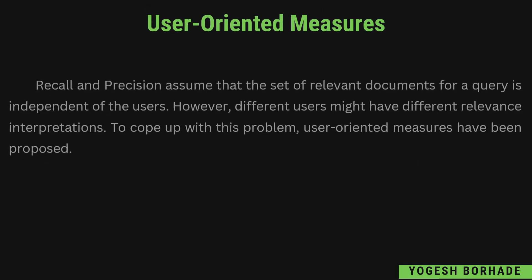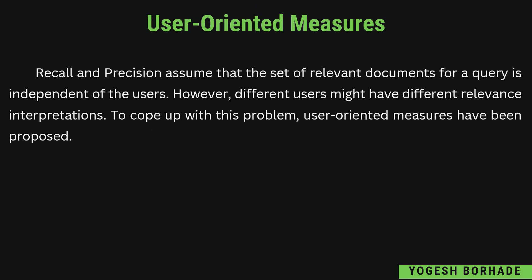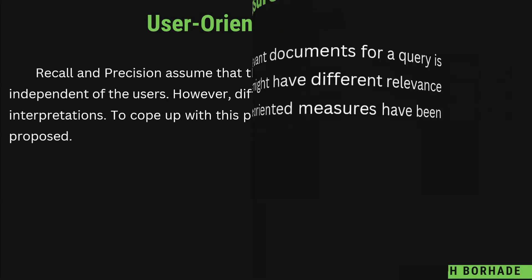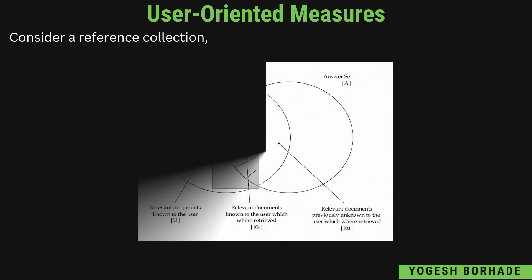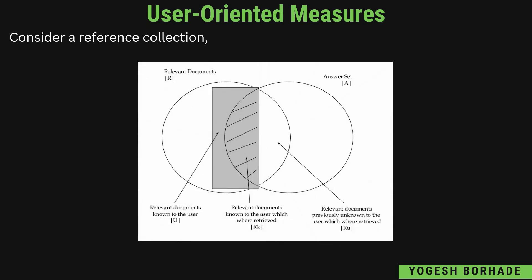तो user-oriented measures — user-oriented measures हम क्यों propose किए? क्योंकि recall और precision assume करते हैं कि relevant documents independent हैं user से, यानी user को consider नहीं किया जाता था, जो हमने lecture 3 में देखा। इसी problem को solve करने के लिए user-oriented measures propose किए गए जिसमें हम user को consider करते हैं। इसके लिए पहले हमें एक diagram consider और understand करनी पड़ेगी, उसके बाद formulas समझ में आएंगे।